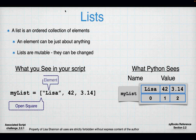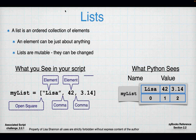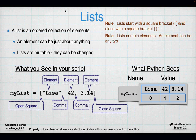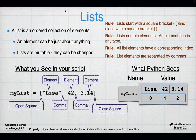To correctly define a list, you have to open it with a square bracket. If there are multiple elements, you will have a comma between each element, and you will close it with a closing square bracket. The brackets have to be balanced. Everything in a list has a corresponding index, and all list elements are separated by commas.